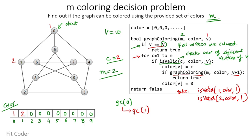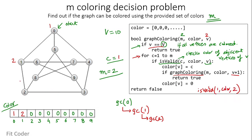We again call graph coloring for vertex 2. The base condition is false. In the for loop with C=1, we check adjacent vertices for vertex 2 — none are colored 1 — so we can color vertex 2 with color 1. Then we call graph coloring for vertex 3.